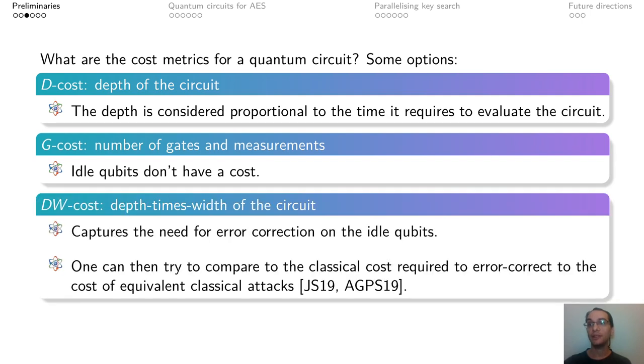Finally, we have the depth times width of the circuit. This captures the idea that even idle qubits that are not being operated upon have to be error corrected and this has a cost. If this error correction has a classical cost, this can be used to partially compare the cost of a quantum algorithm with that of a classical one.